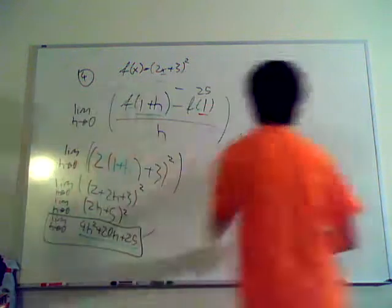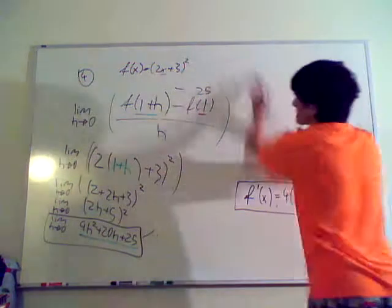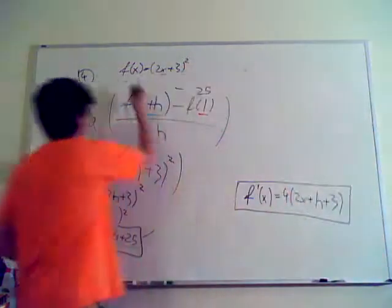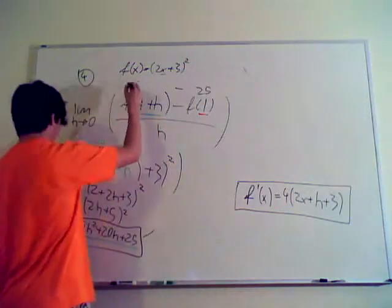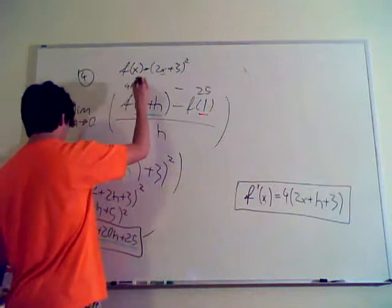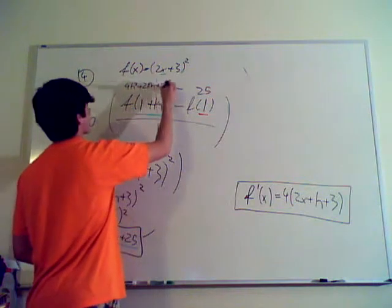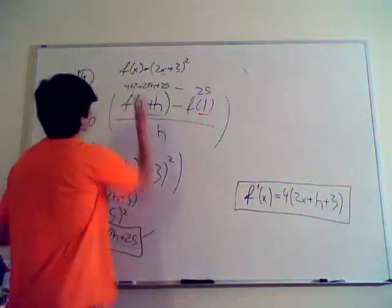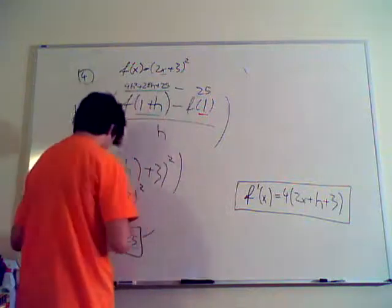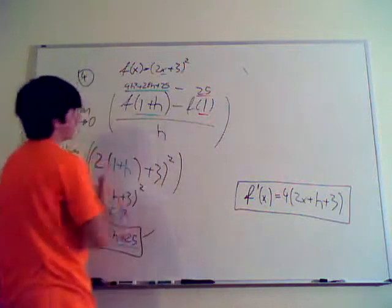So, what you really do is, you write this out. So, you take the limit. Let me actually substitute it. Right here. 4h squared, plus 20h, plus 25, minus this big, still the green part. And, this is the red part, and you divide that by h.